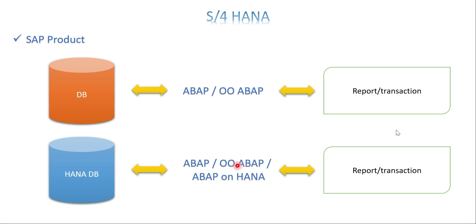They then introduced a layer called ABAP and HANA. There is a new concept called code pushdown, where most of the code tries to execute at the database layer. For that they preferred a new syntax, and that collection of new syntax is called ABAP and HANA. Once we learn ABAP and HANA and use it in our programs, it automatically goes and gets most of the data from the database itself, and if required we do data manipulation in the application layer after that.